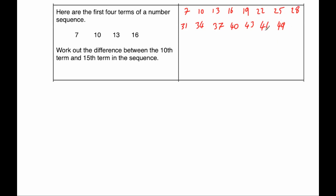So we've got 15 terms there. The difference between the 10th term and the 15th term: the 15th term is equal to 49, and the 10th term is 34. Subtracting them — 49 take away 34 is equal to 15. So the difference between the 15th term and the 10th term is 15.